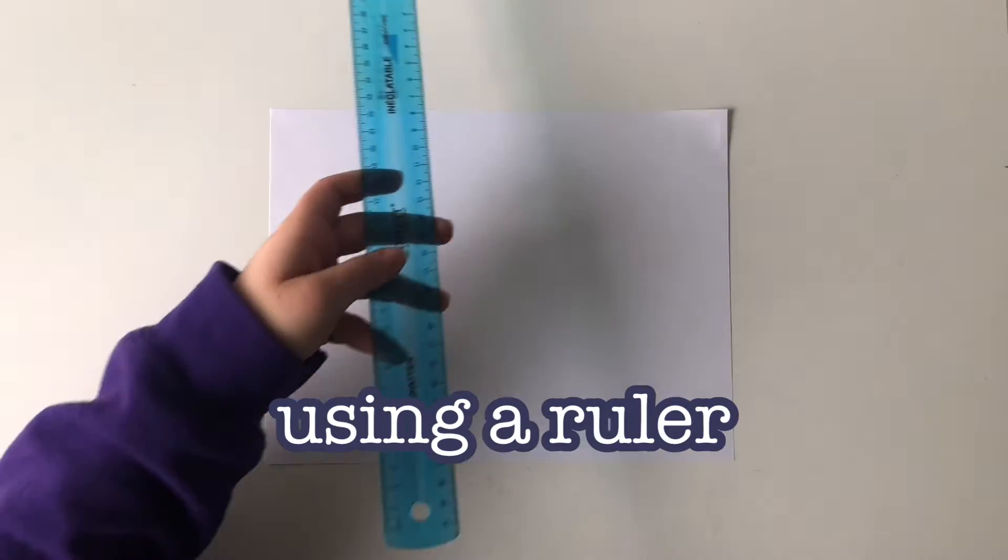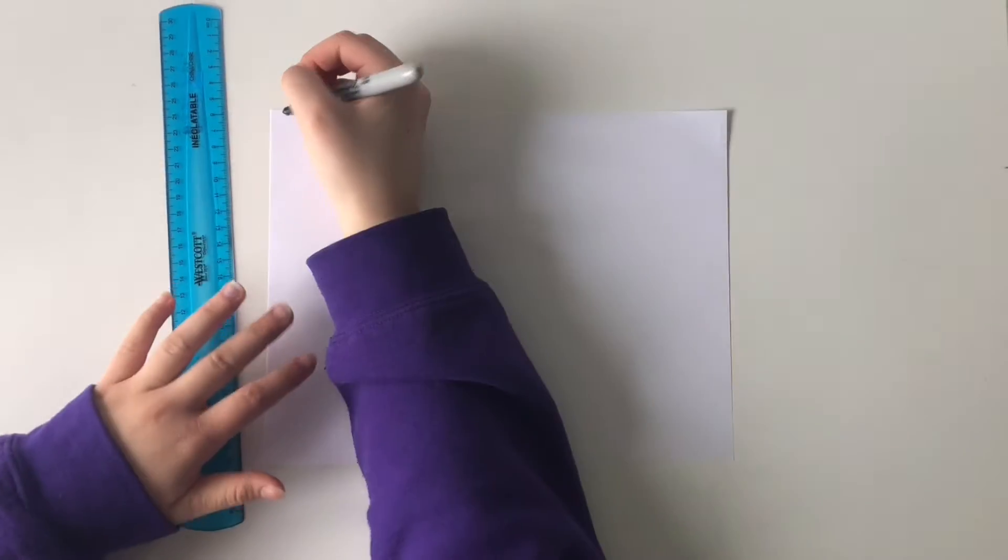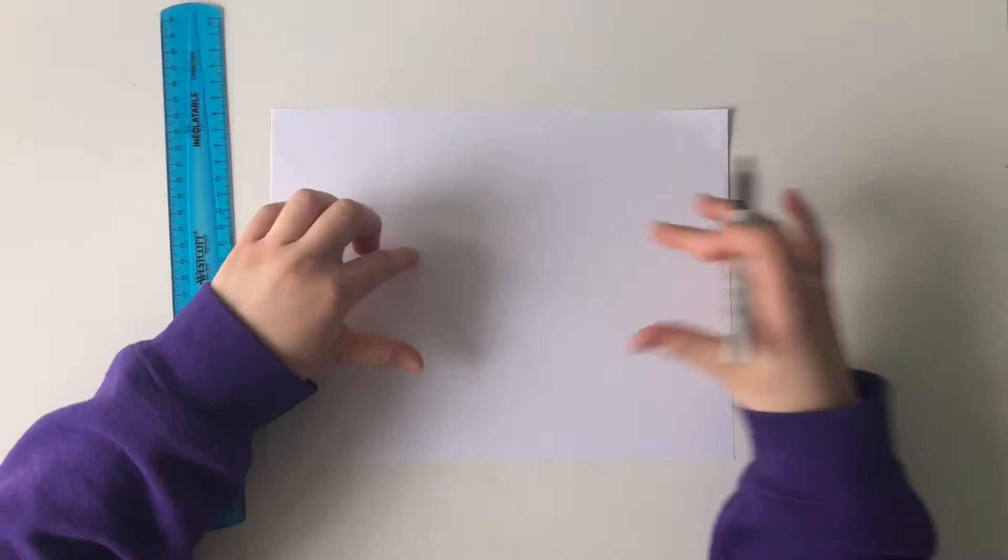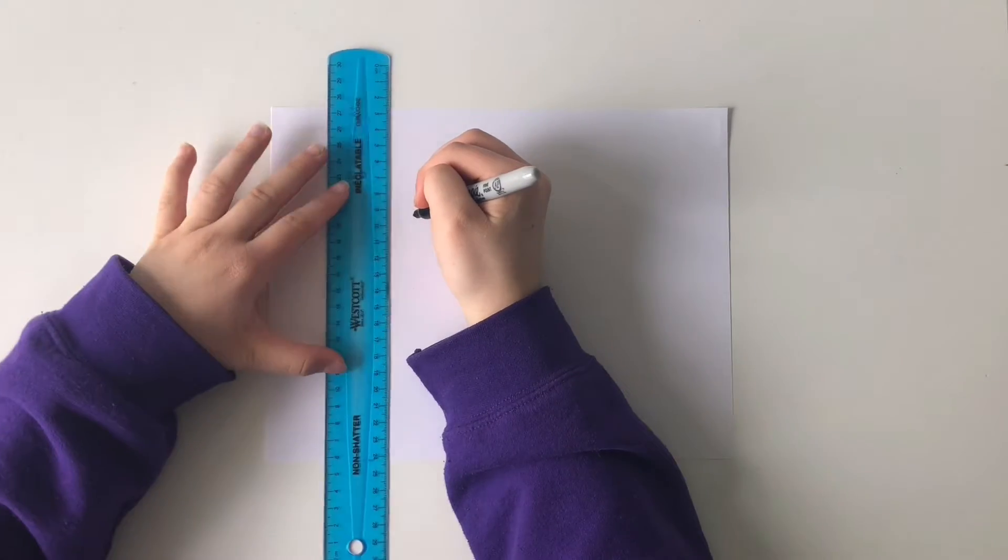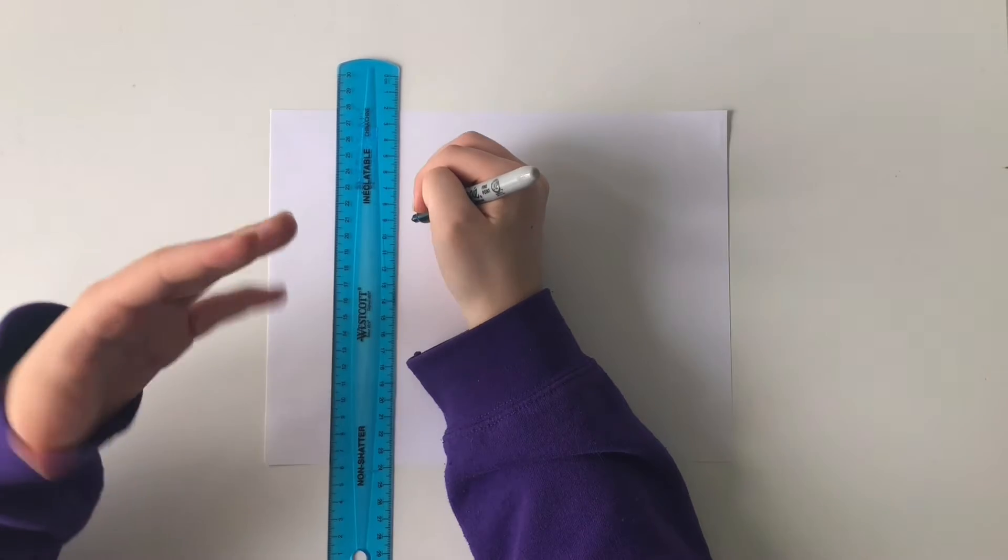To make this 3D cube, if you want to be really precise, I would recommend using a ruler. So going a quarter of the way in from the left side, this is really just if you want to make your cube in the center of the paper. Draw a line down however big you want your cube to be.